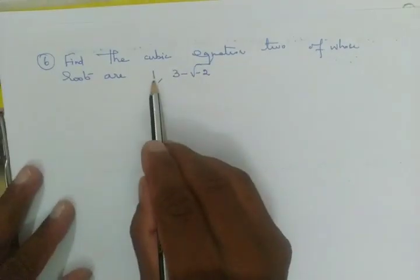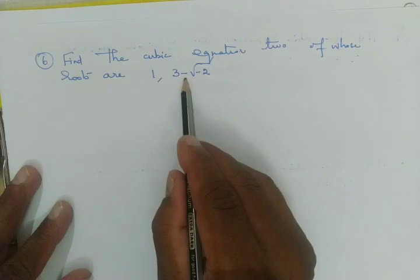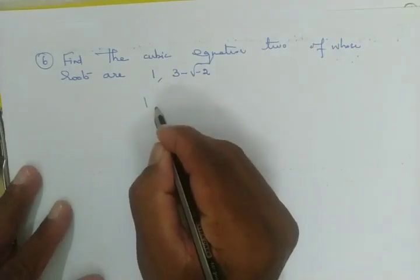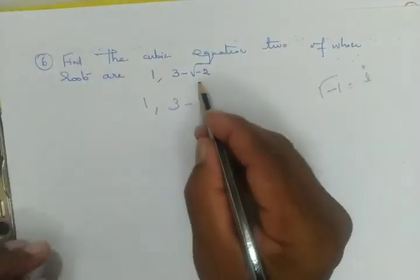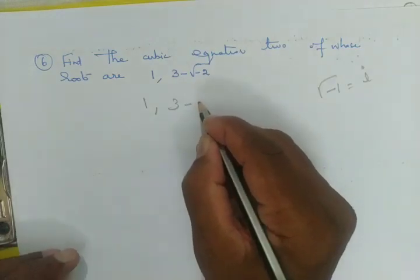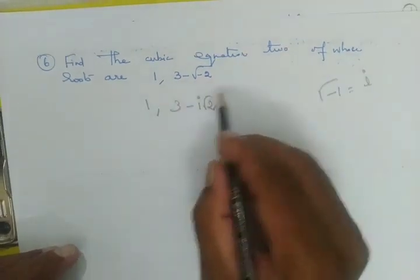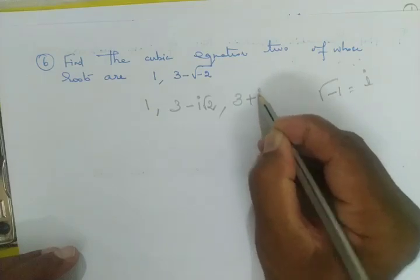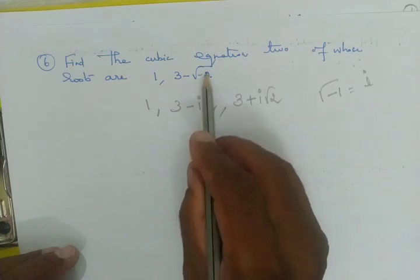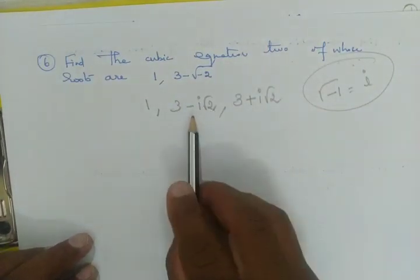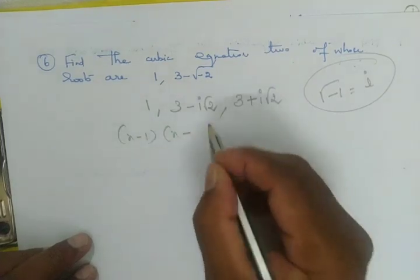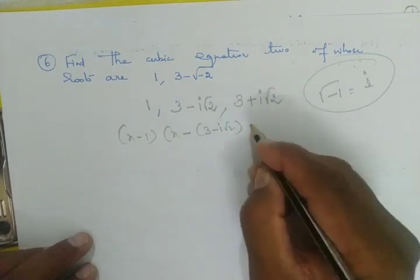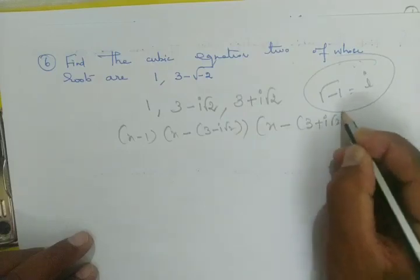Now find the cubic equation whose root is 3-√(-2). We note that √(-2) = √(-1)·√2 = i√2. So 3-√(-2) = 3-i√2. Its conjugate is 3+i√2. Therefore we have 3 roots: 1, 3-i√2, 3+i√2.